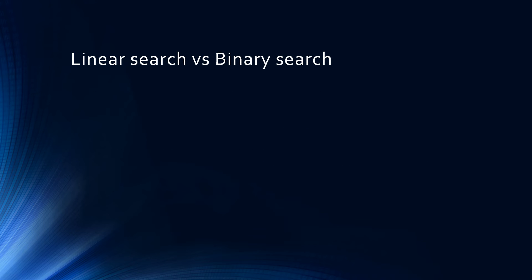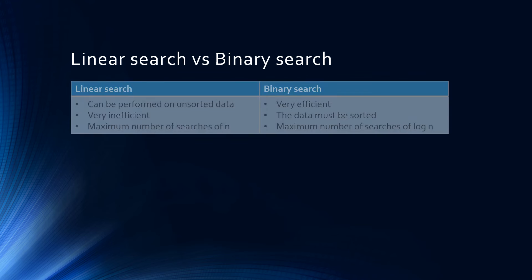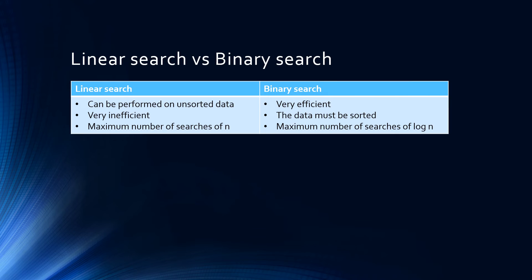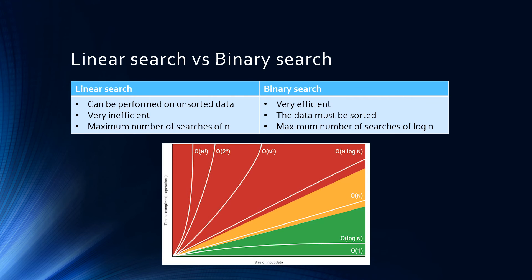In an exam you could be asked to compare these two types of search. The linear search has one primary advantage: it works on unsorted data. Other than that, it is far less efficient than the binary search. With a linear search, the worst possible case is that you find the item in the last position or find that the item is not in the list at all. This has a complexity of O(n), meaning the length of the list determines how many possible searches might be carried out. The binary search, on the other hand, halves the list each time.